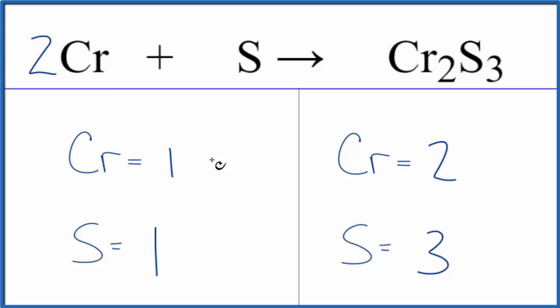One times two, that gives us two chromium atoms. Those are the same. Three sulfurs here and one here, so we put a three as a coefficient. One times three, that'll give us three sulfur atoms. Everything's the same.